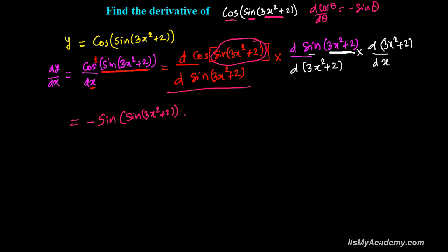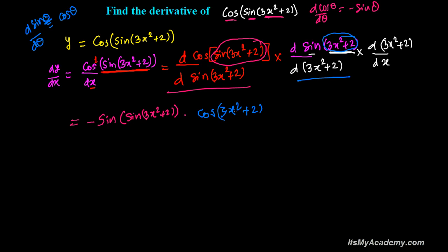We've finished with the cosine part. Now for the sine part: the derivative of sine theta with respect to theta is cosine theta. So instead of theta we have 3x squared plus 2, giving us cosine of 3x squared plus 2. Then the derivative of 3x squared plus 2: the constant 3 comes outside, derivative of x squared is 2x, and the derivative of the constant 2 is 0. So 3 times 2x gives 6x.